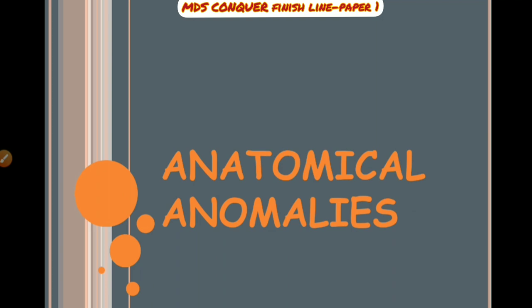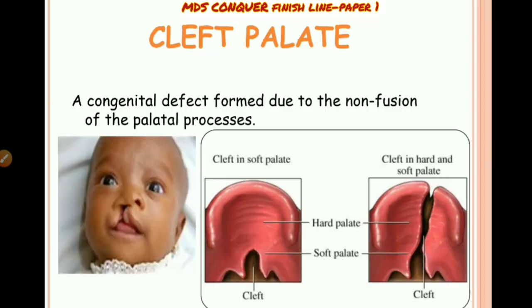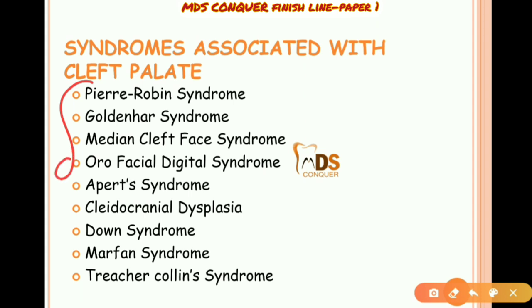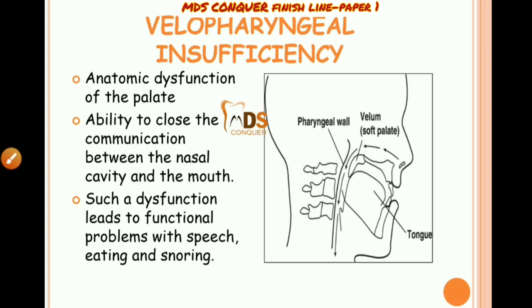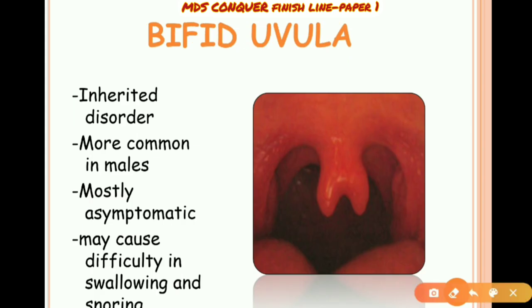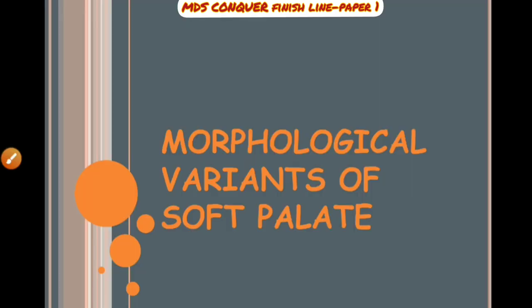Applied aspects can be grouped into anatomical anomalies like cleft palate, along with associated syndromes. Velopharyngeal insufficiency occurs due to anatomic dysfunction of the palate. Bifid uvula is a malformation, most commonly seen in males.